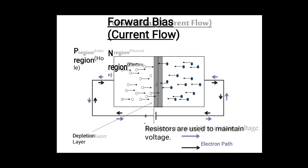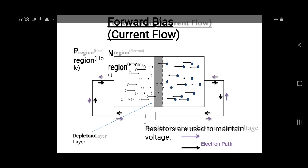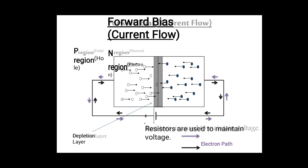As shown in the figure, this is the forward bias condition — because the LED emits light only when in forward bias. A voltage battery is applied across the two terminals: the P region and the N region. In the P region there are holes; in the N region there are electrons. When voltage is applied to the terminal, the electrons in the N region get sufficient energy, move towards the junction (the depletion region), and recombine with the holes in the P region.